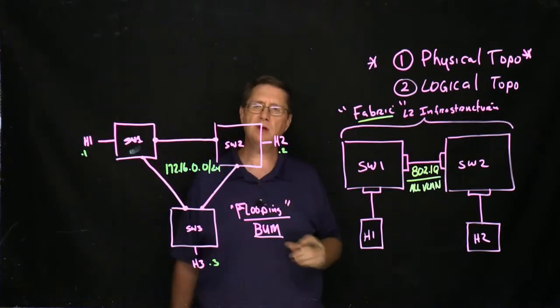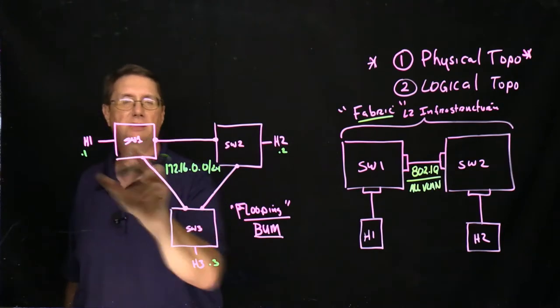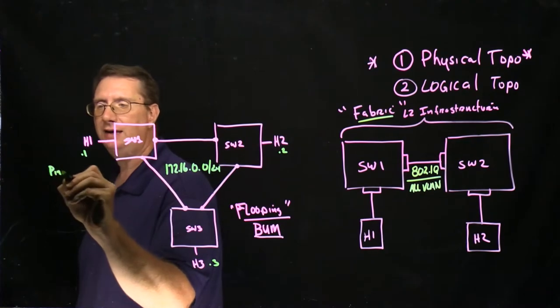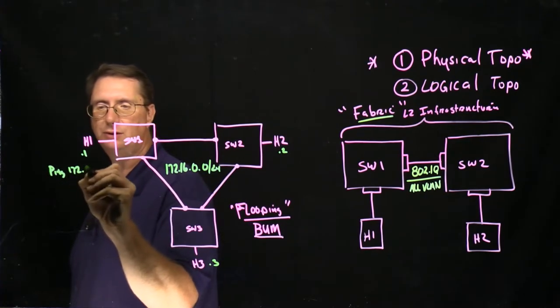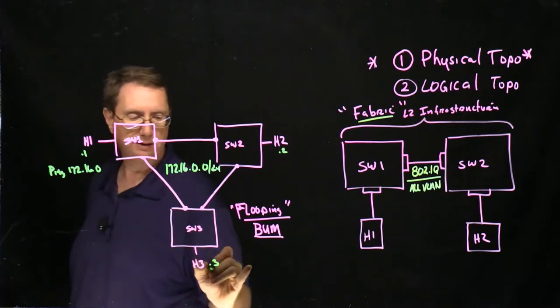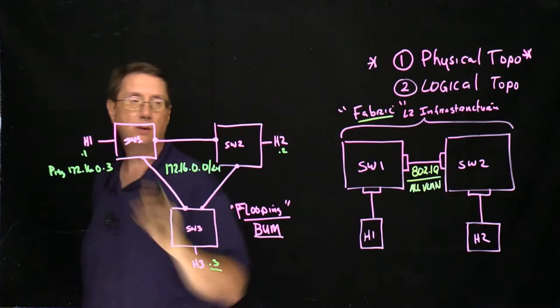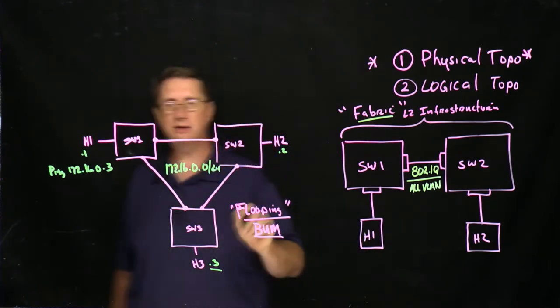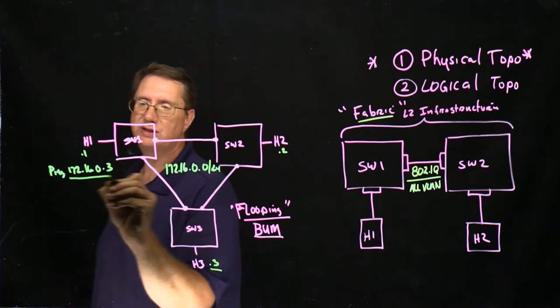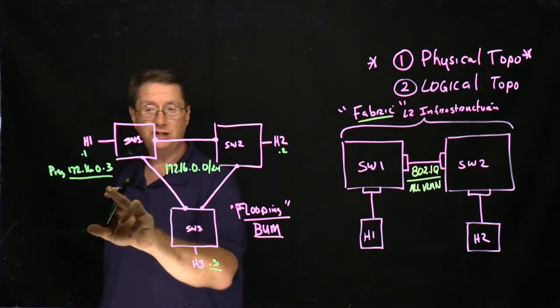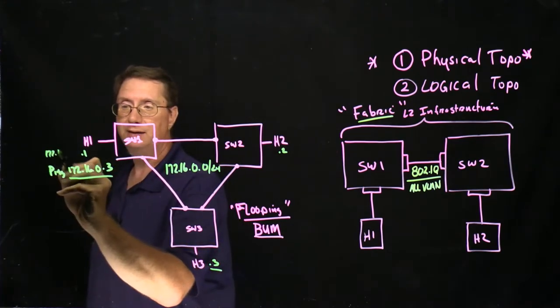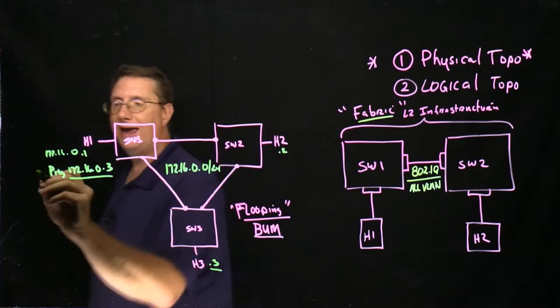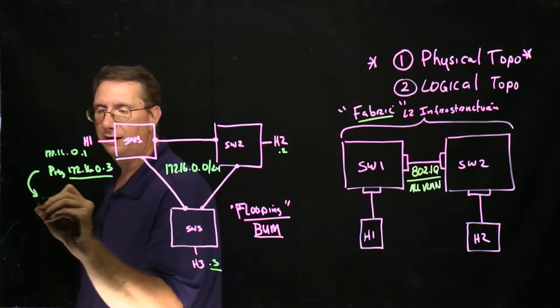Now this causes us some significant consternation when we start looking at the behavior of this. So let's say on this host I type ping 172.16.0.3 because I want to ping host three. Now we've already discussed how this process takes place. So the object here is this guy, I know the destination IP, I know the source IP, so I can actually build a layer three packet, but when I hand that layer three packet down to layer two,